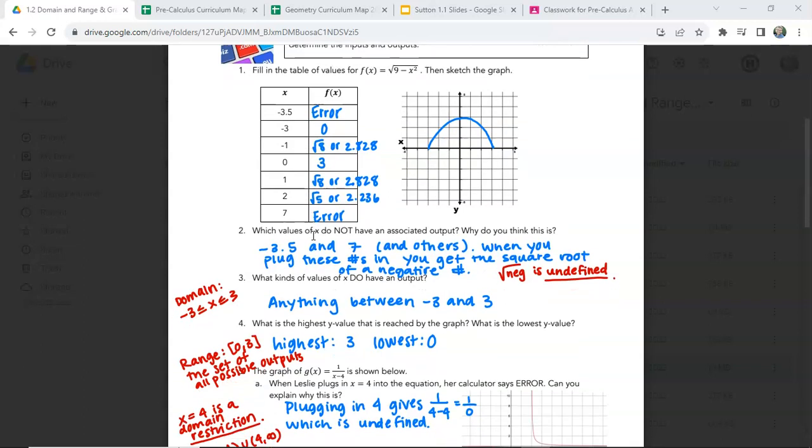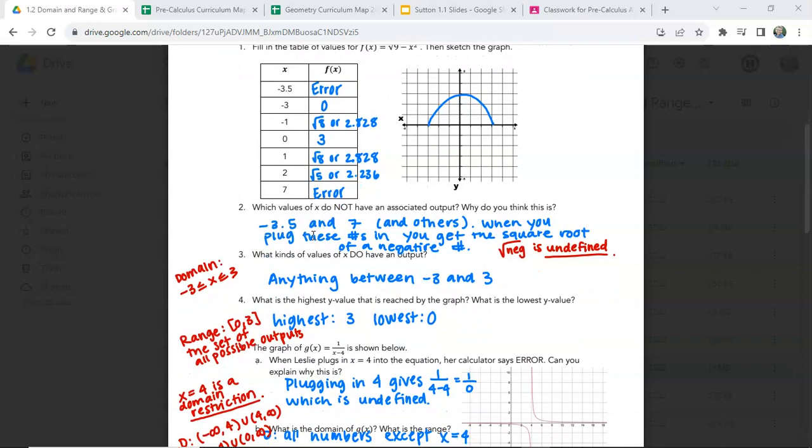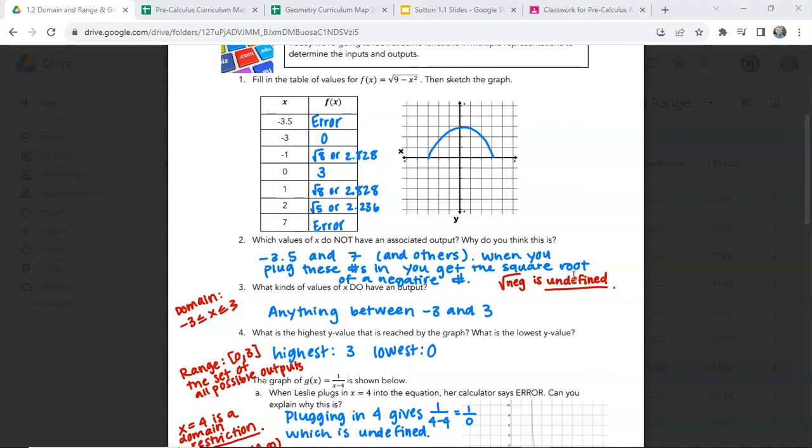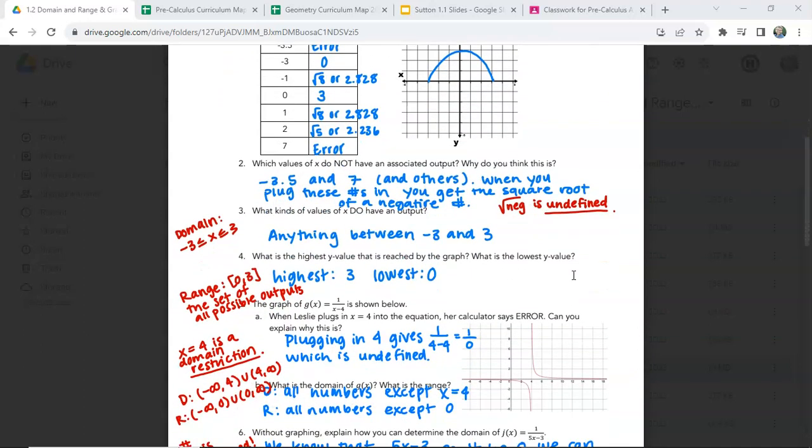So which values of x do not have an associated output? Why do you think that is? Negative 3.5 and 7 and others. When you plug these numbers in, you get the square root of a negative number, and the square root of a negative number is undefined in the kind of real coordinate plane that we have here. Since we don't have any imaginary numbers in this coordinate plane, we cannot graph those square root of negative numbers.